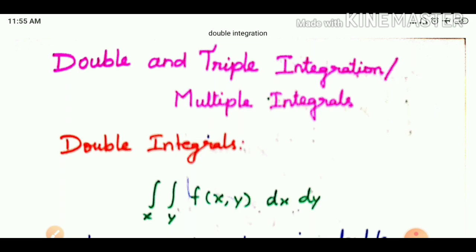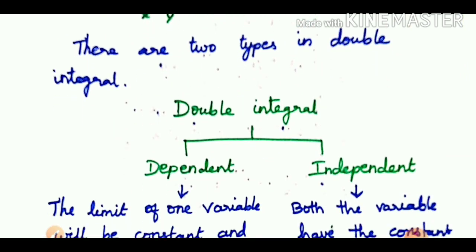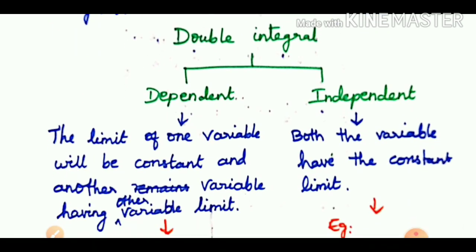In 2D, we have two dimensions, so we use x and y. We have a function with x and y, and double integration deals with how that function moves. We have two variables x and y, and we integrate both. There are dependent and independent types — a variable limit is dependent, and a constant limit is independent.